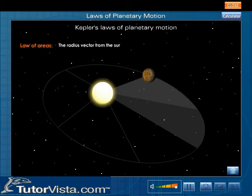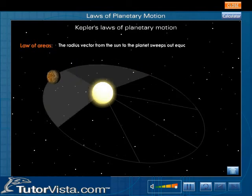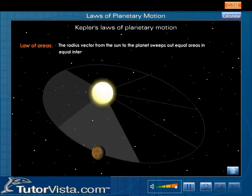The radius vector from the sun to the planet sweeps out equal areas in equal intervals of time.